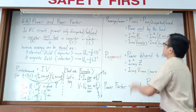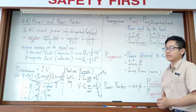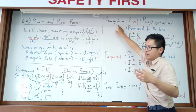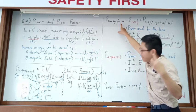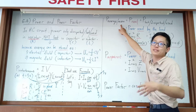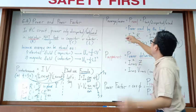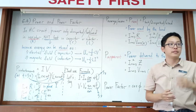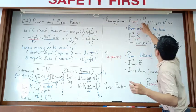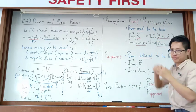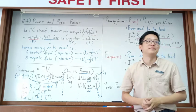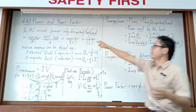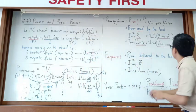For average power (also called mean power or real power), we calculate the power that is truly used up by the circuit. Real power is the power lost or dissipated — the power that is really used up, which occurs only in the resistor.